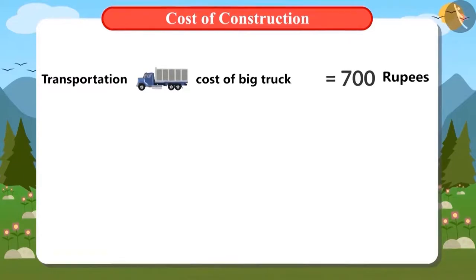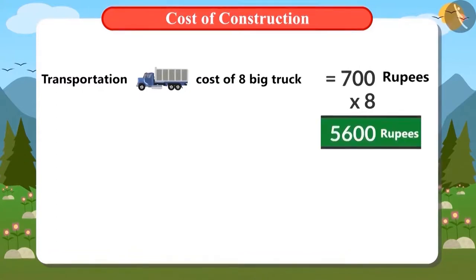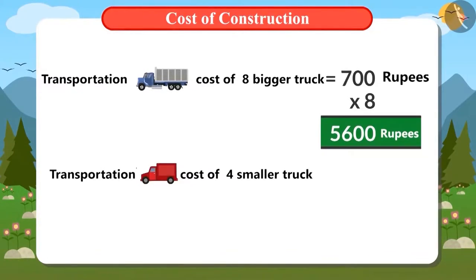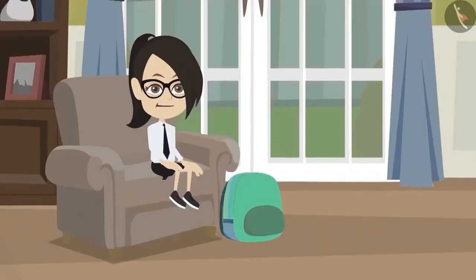It costs 700 rupees to bring bricks in a big truck and 350 rupees in a small truck. To bring bricks 8 times in a big truck, multiply 700 by 8, which gives 5,600 rupees. For 4 small trucks, multiply 350 by 4, which gives 1,400 rupees. So the total transportation cost is made up of 5,600 rupees for big trucks and 1,400 rupees for small trucks.